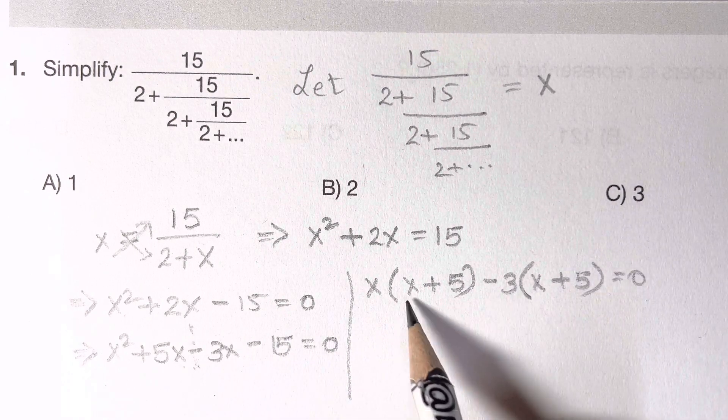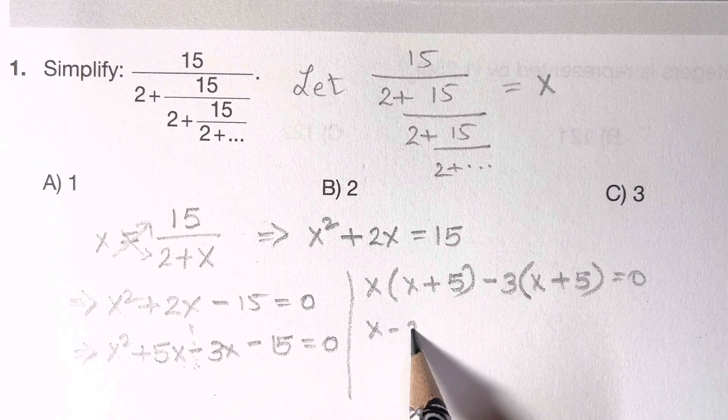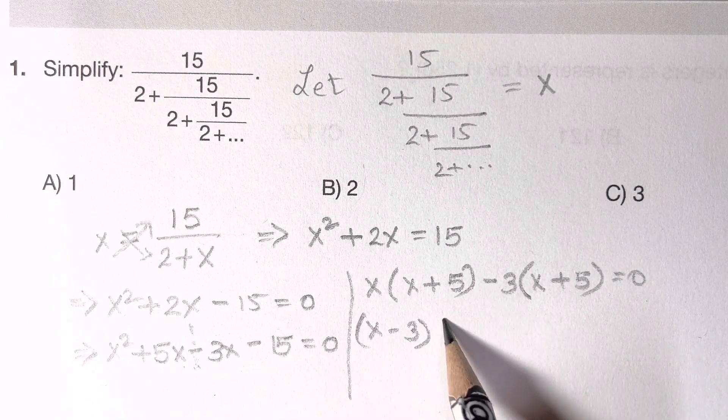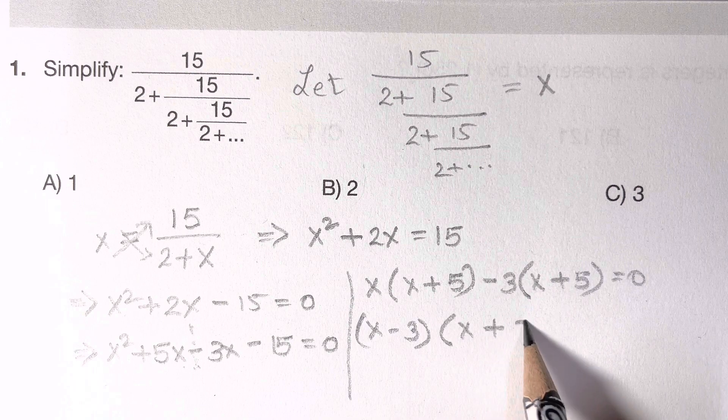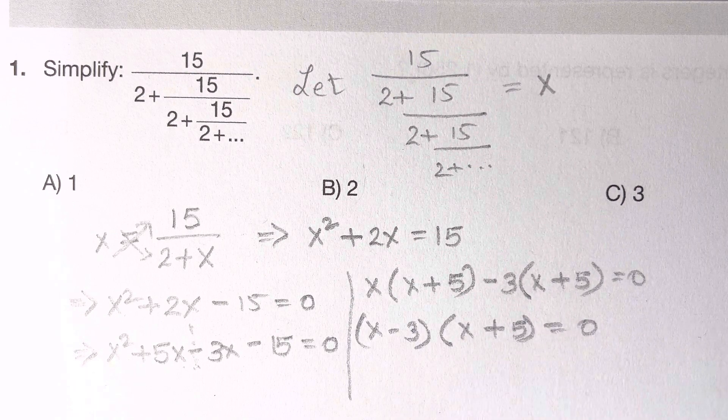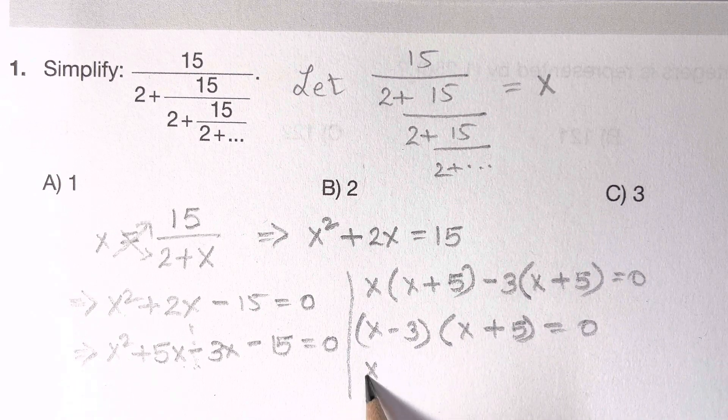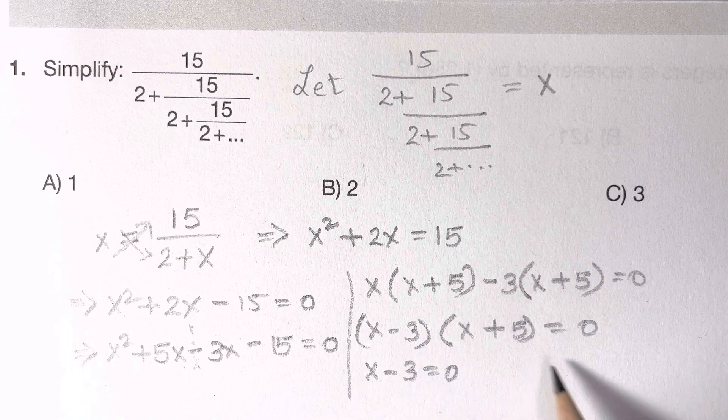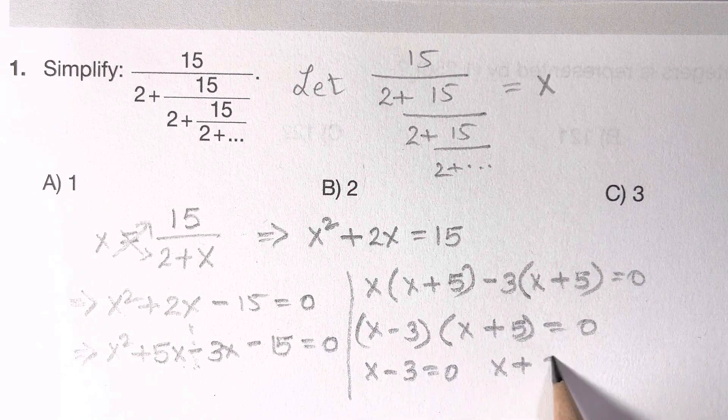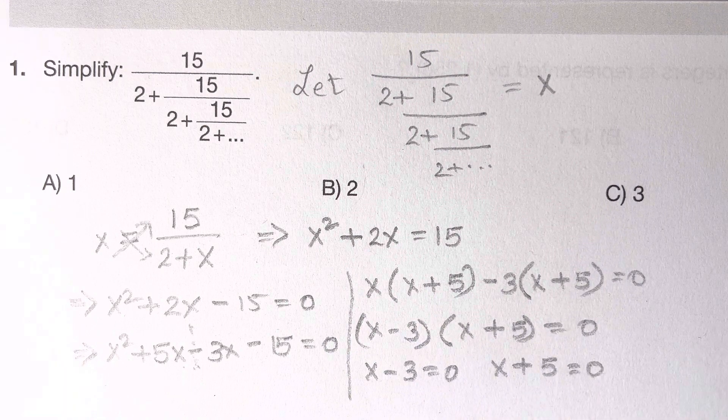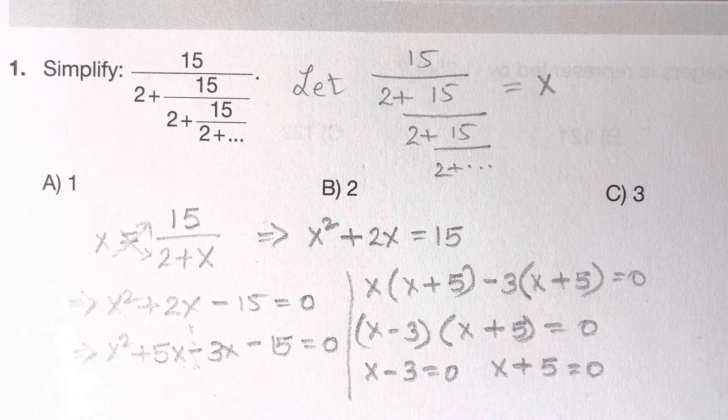So you have x minus 3 times x plus 5 equals to 0. So x minus 3 is equal to 0 is one solution, and x plus 5 is equal to 0 is one solution. So what are the values of x? x is equal to plus 3, comma, negative 5.